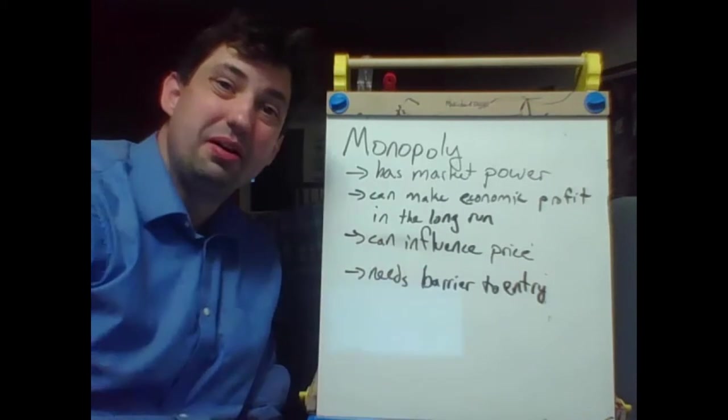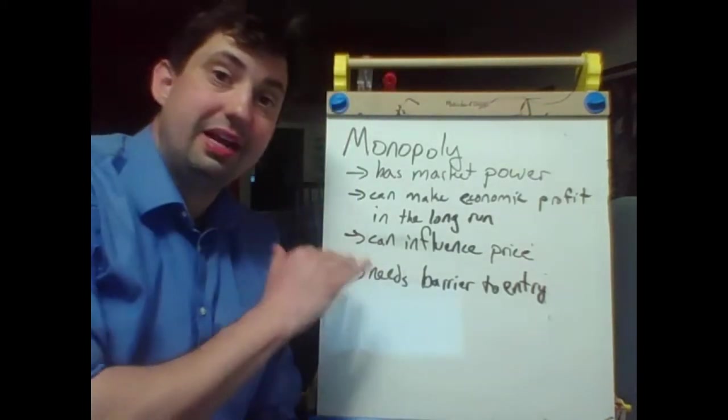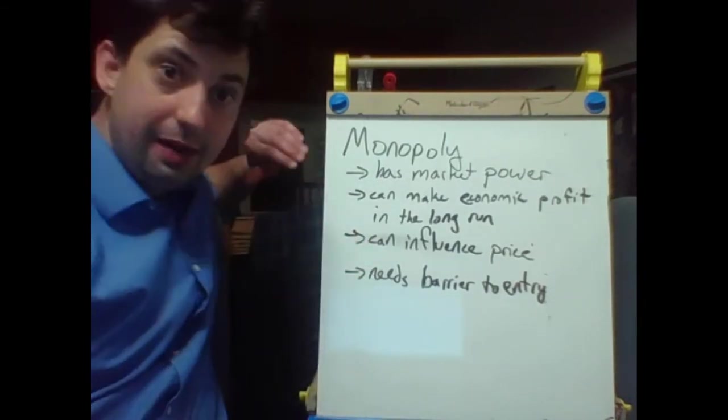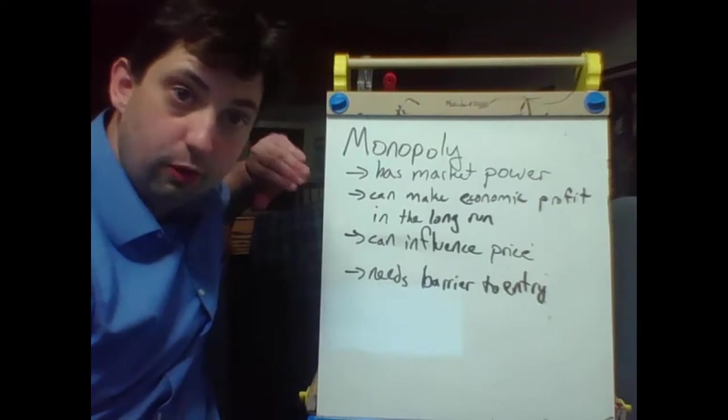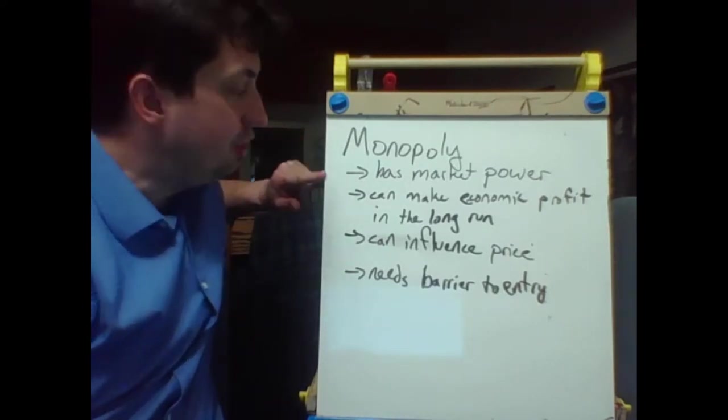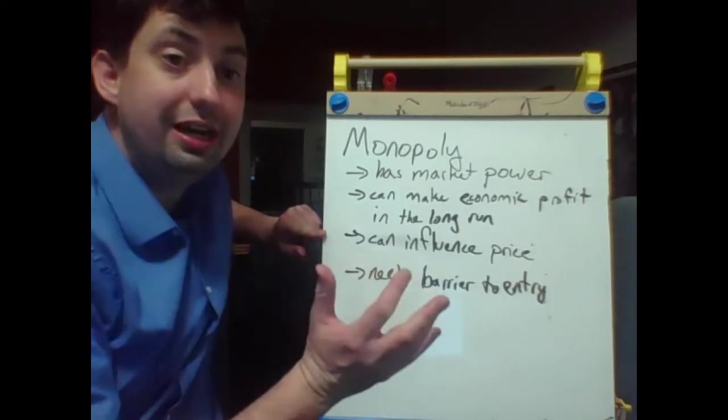There's a couple of ways to think about it. They're interrelated, so they all kind of mean the same thing. They can make economic profit in the long run. They can keep their price well above average total cost, that particular unit, and they do it by being able to influence the price by constraining output.